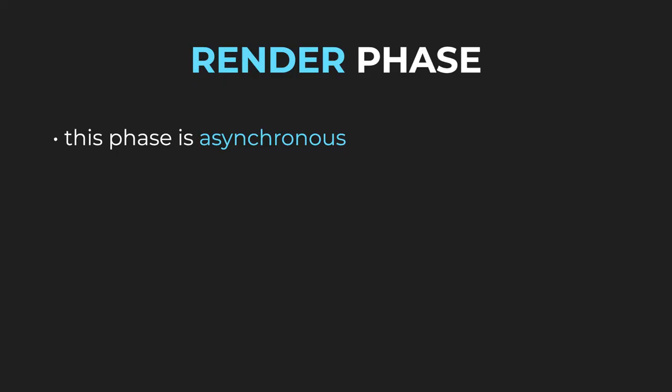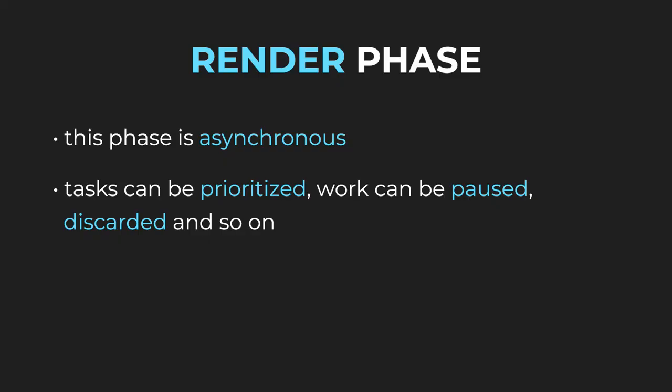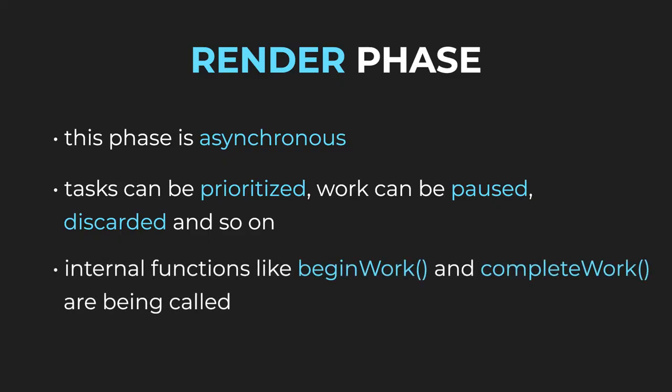During the render phase, React does all sorts of asynchronous things behind the scenes that aren't visible to the user. React can prioritize tasks, pause some work or even discard it. During this phase, React processes all of the fibers, which represent units of work. It shouldn't be surprising that internal functions like Begin Work and Complete Work are being called. Those process all the fibers and we will come back to them later.